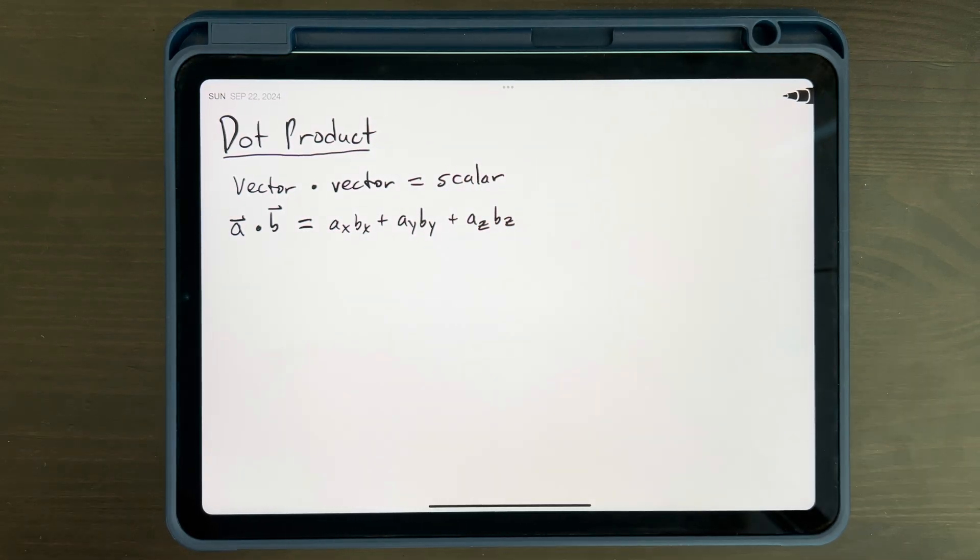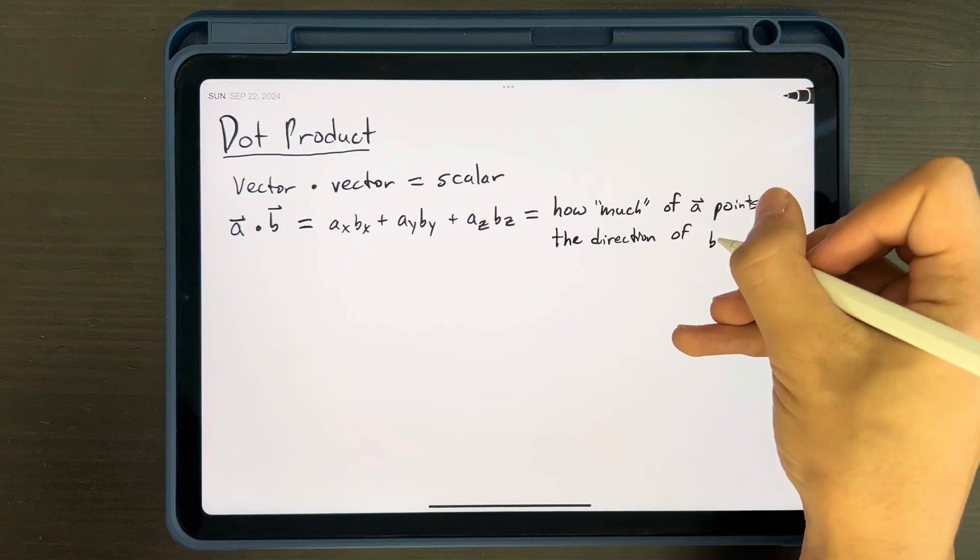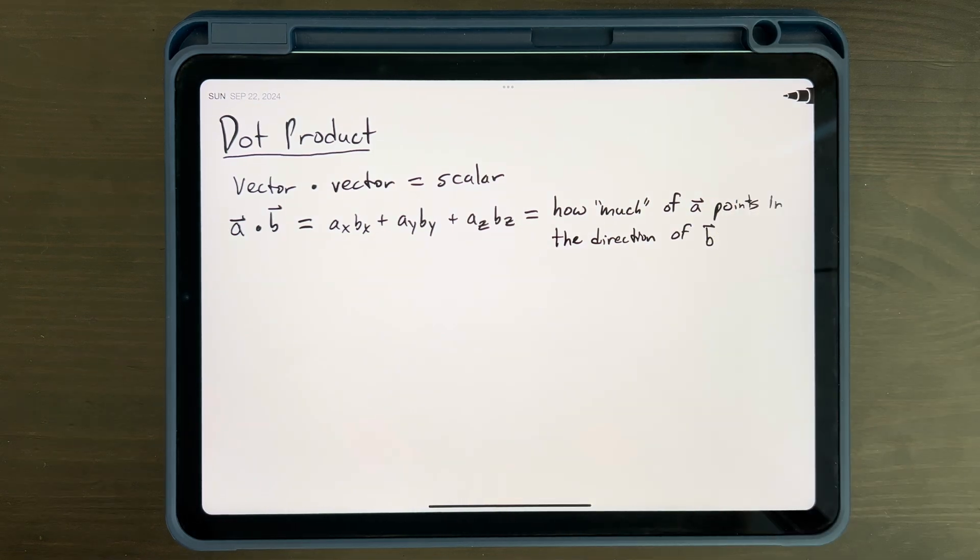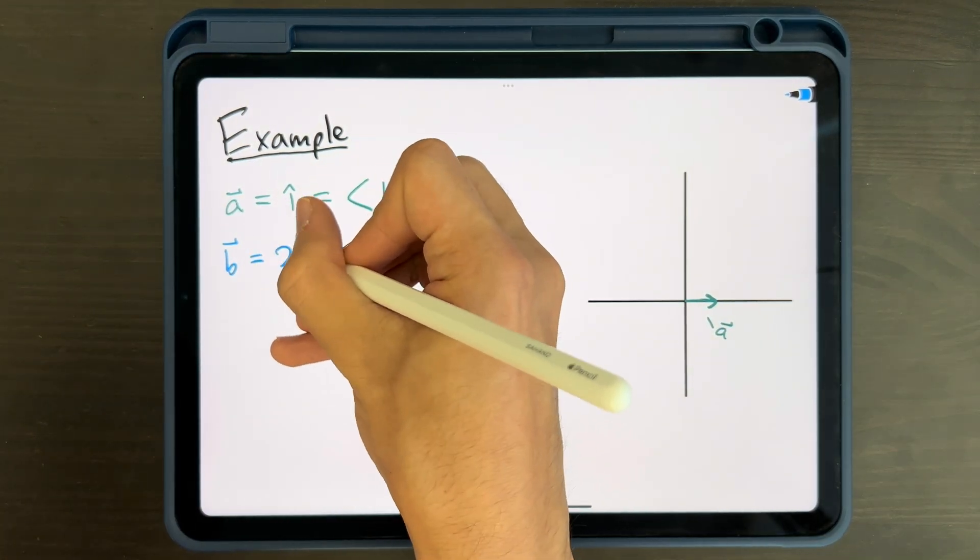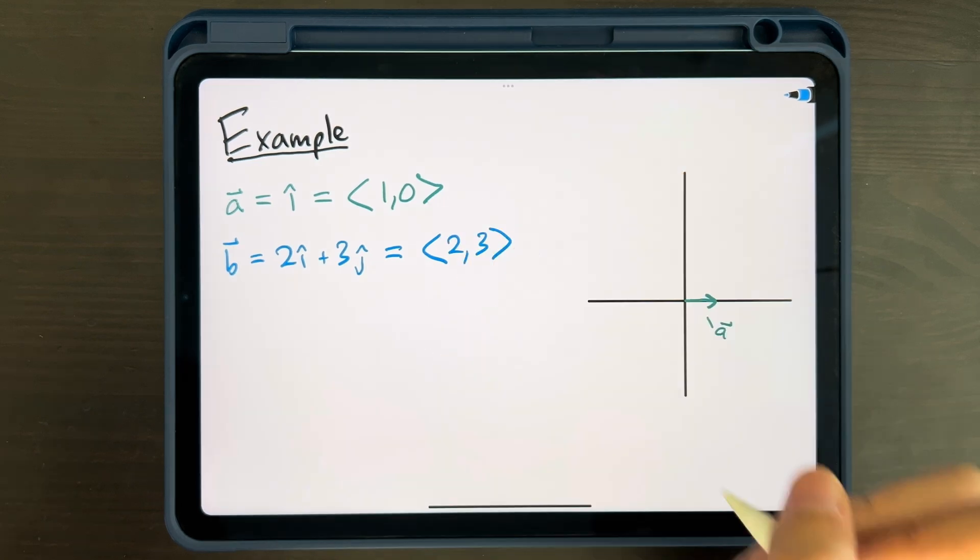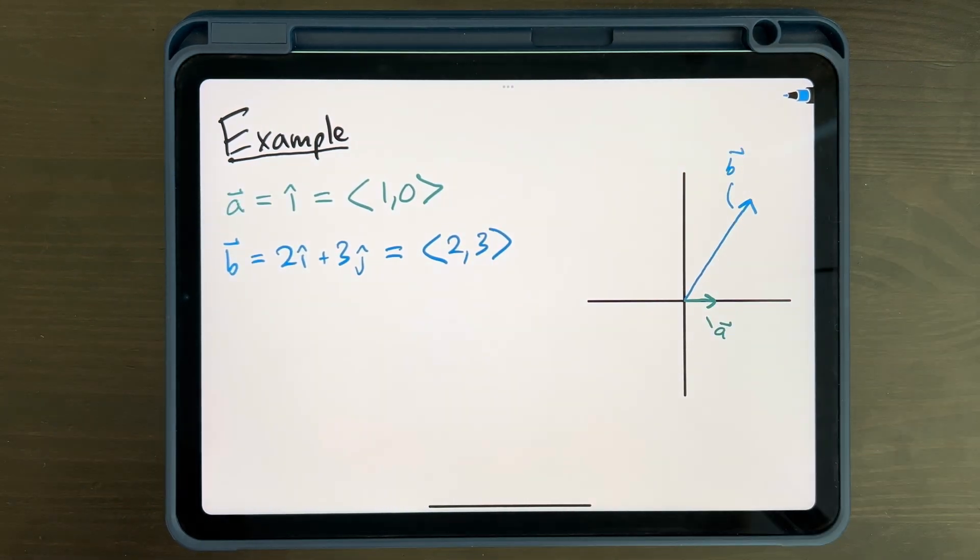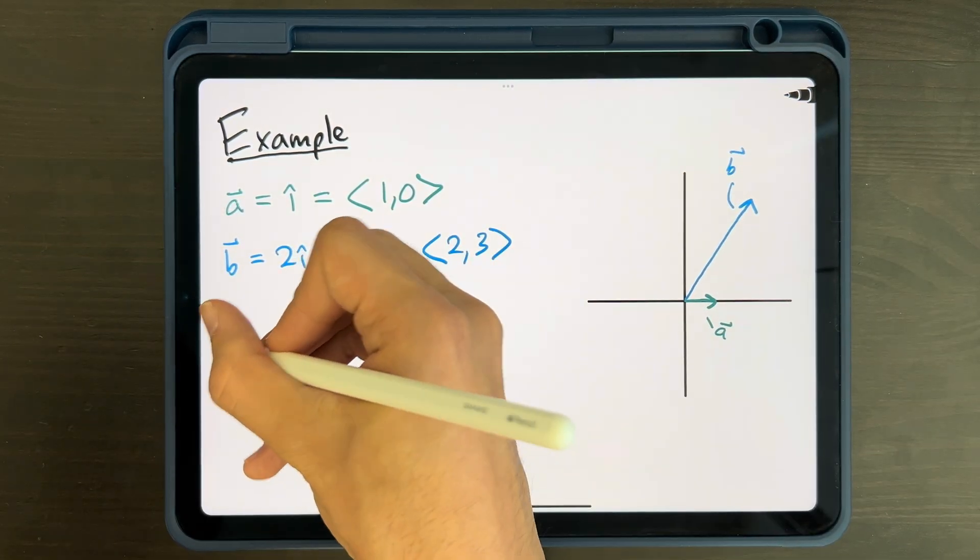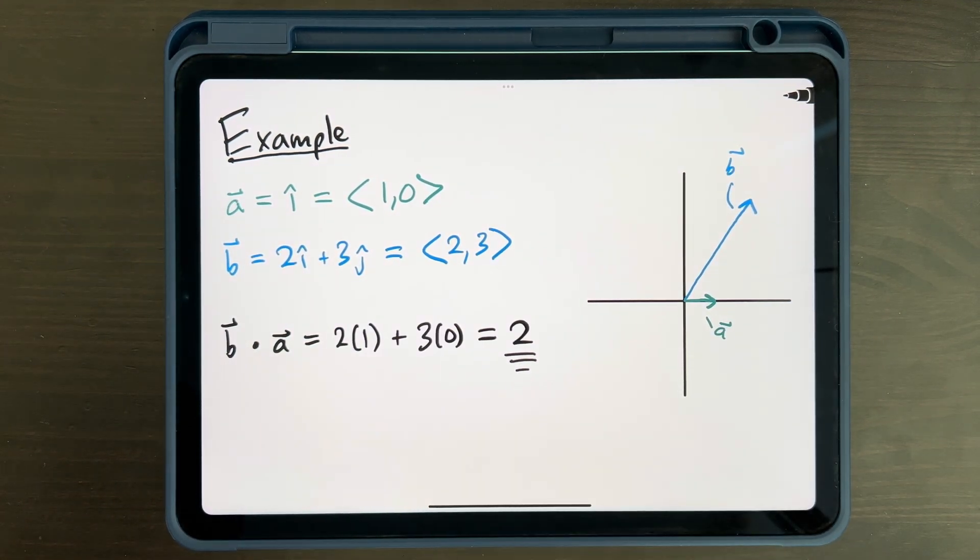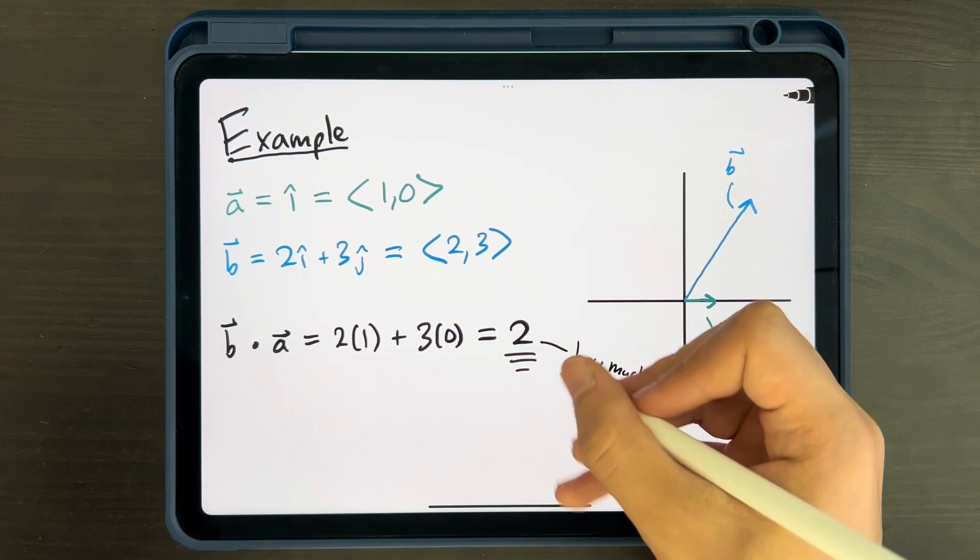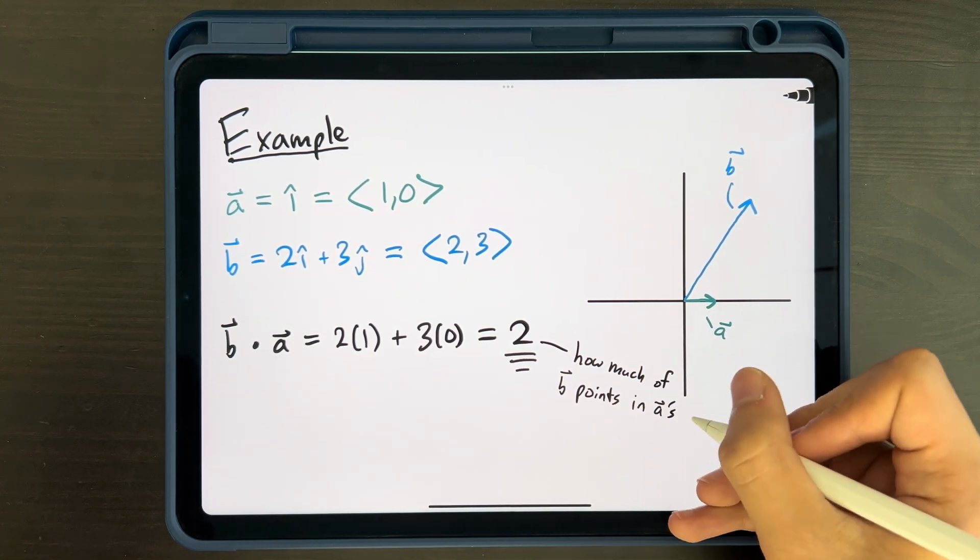That's great, but what does that represent? Well, the dot product of two vectors tells you how much of one vector points in the direction of another. Let's look at a simple example: the vector i-hat, or 1,0, which we'll call A, and the vector 2i-hat plus 3j-hat, or 2,3, which we'll call B. If we take the dot product of these two vectors, we get 2. This tells us that the amount of vector B that goes in the direction of vector A, and vice versa, is 2.